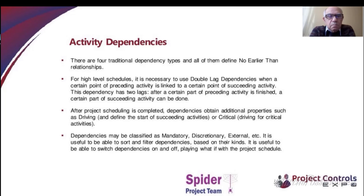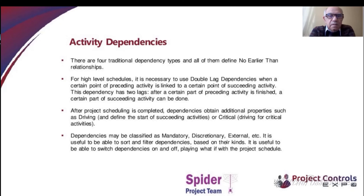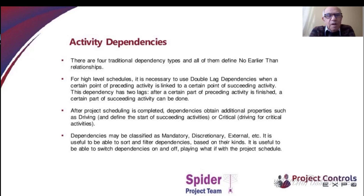Spider Project supports all traditional methods and tools, including the four traditional dependency types: start-to-start, finish-to-finish, finish-to-start, and start-to-finish. But we also have what we call double-leg dependencies or point-to-point dependencies. You can connect a certain point of a preceding activity with a certain point of a succeeding activity, meaning you shall do some amount of work on the preceding activity before a certain part of the succeeding activity can proceed.